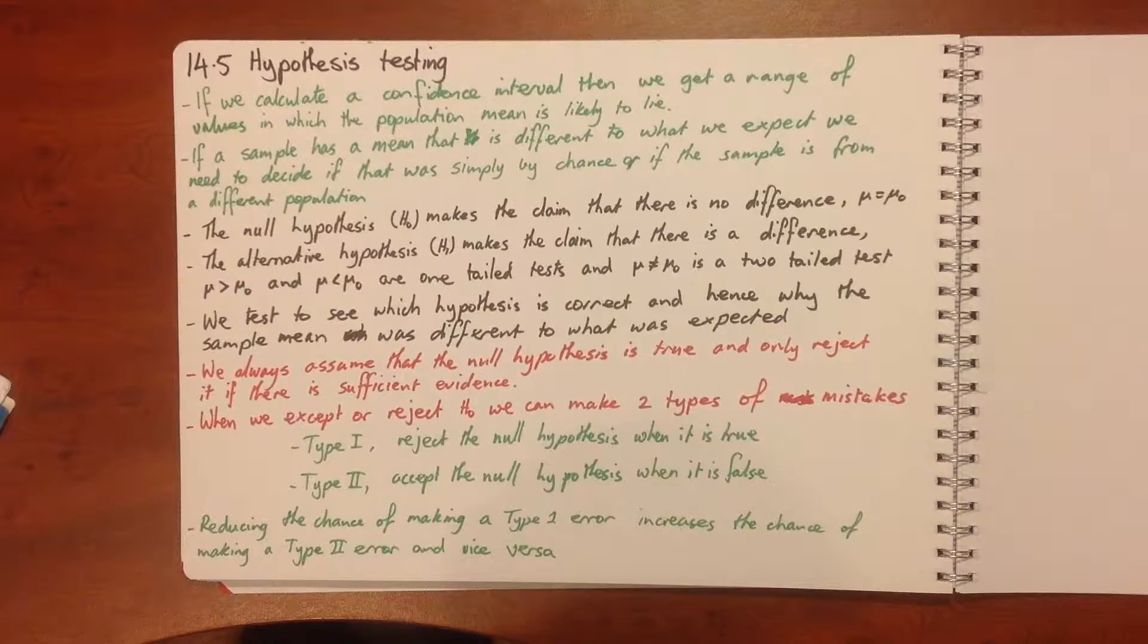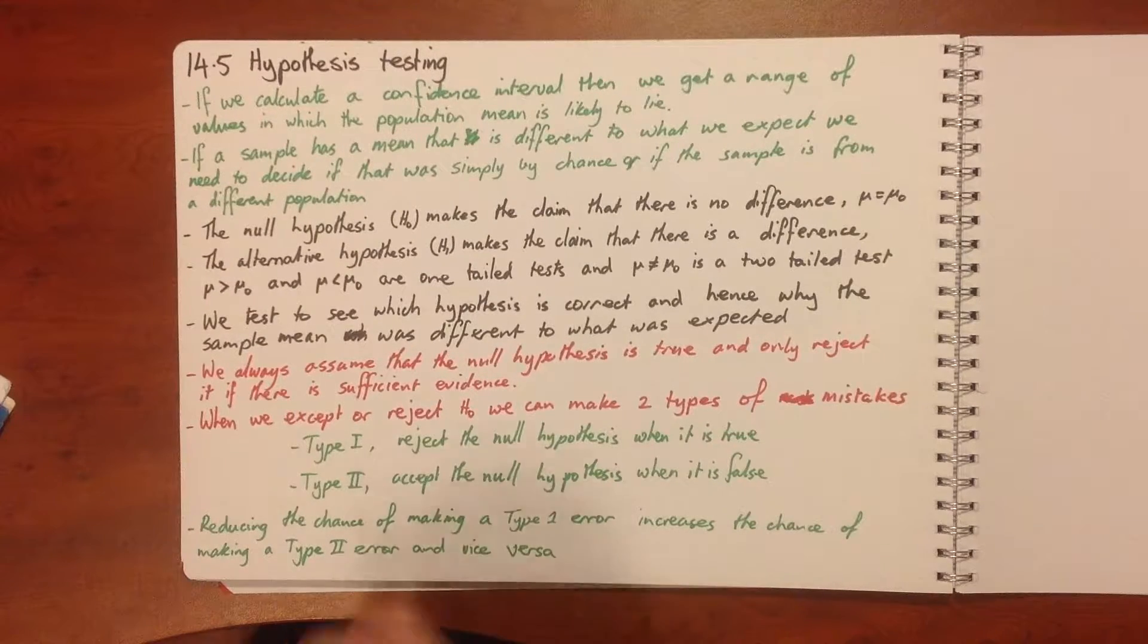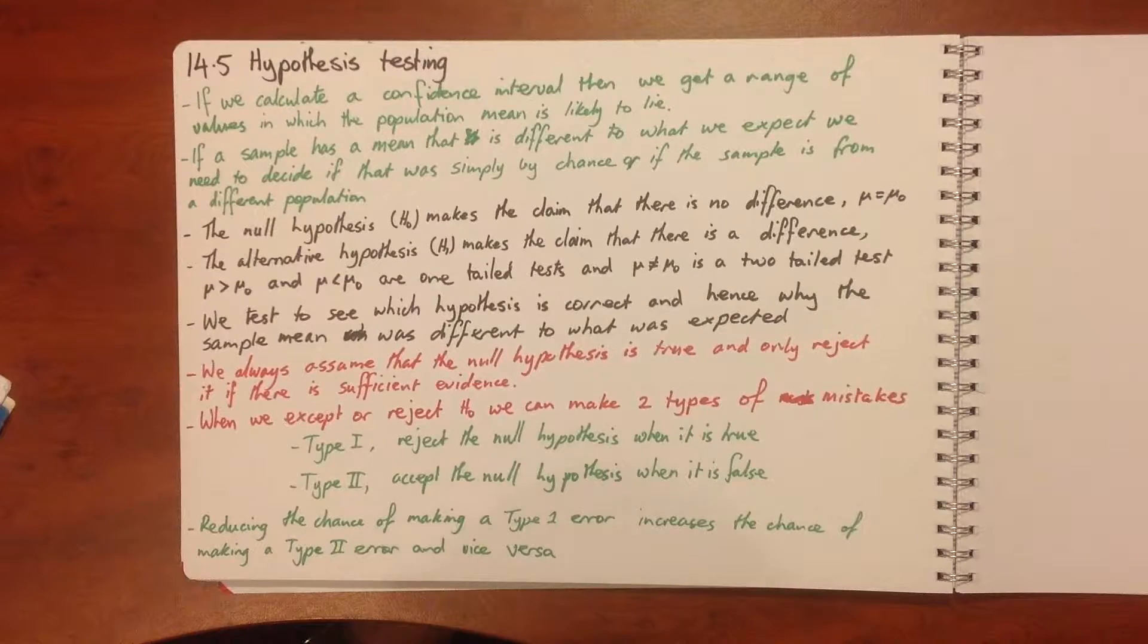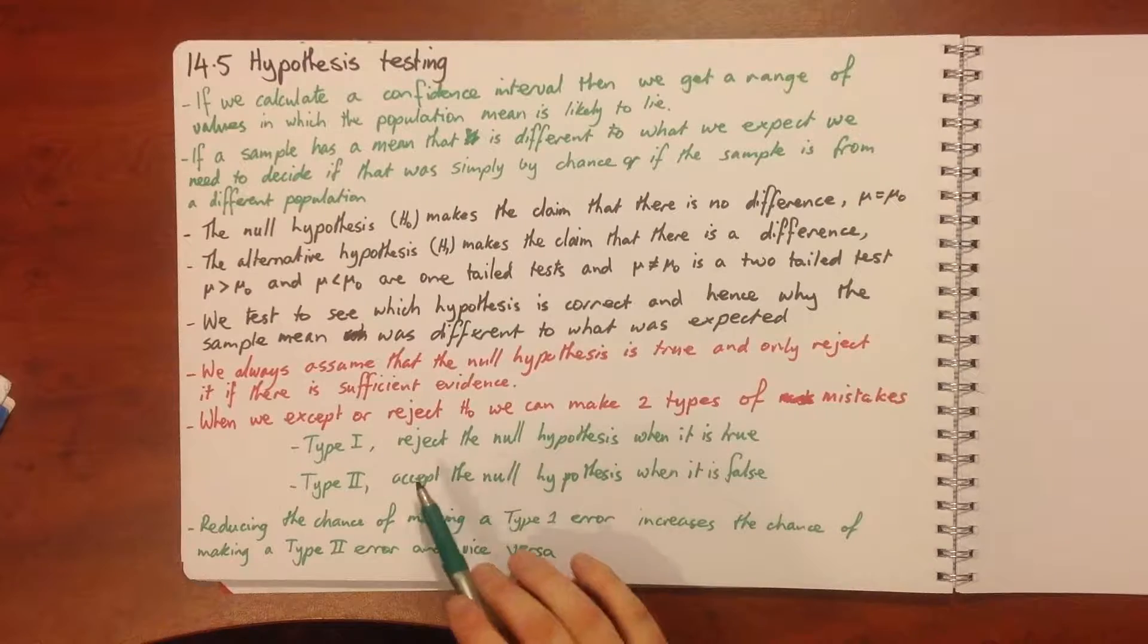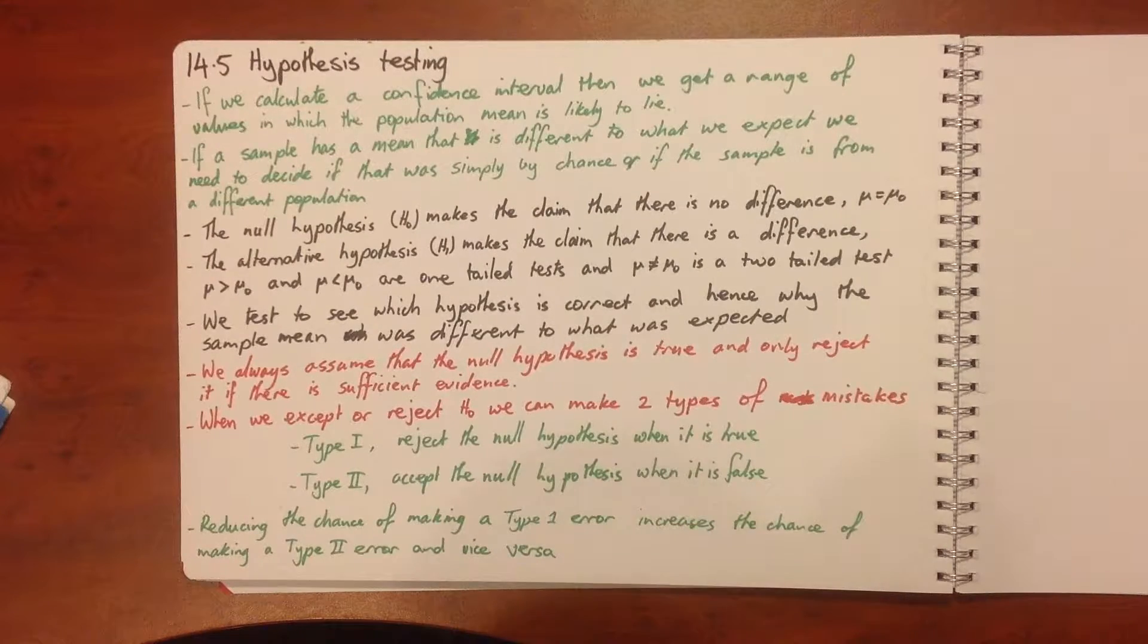When we reject H naught we can make two types of mistakes. There's a type 1 error which is we reject the null hypothesis when it was in fact true, or our type 2 error is we accept the null hypothesis when it was false.